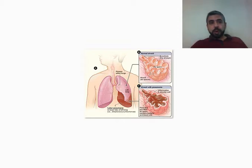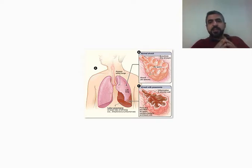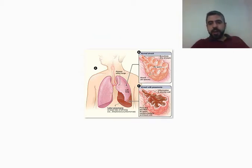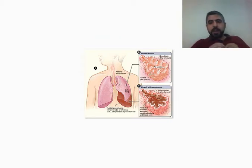Today we are going to talk about the different types of lobar pneumonia. First of all, let's identify what we mean by pneumonia. Pneumonia is an area of the lung that is devoid of air. Alveoli are filled with things other than air, like fluid, inflammatory debris, cells, proteinaceous materials — filled with anything other than air.